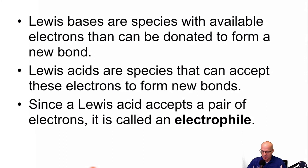Let's talk about Lewis acids and bases. A Lewis acid is anything that can accept a pair of electrons. A Lewis base is anything that can donate a pair of electrons. A Lewis acid accepts a pair of electrons. It's known as an electrophile. A Lewis acid is an electrophile, anything that can accept a pair of electrons.